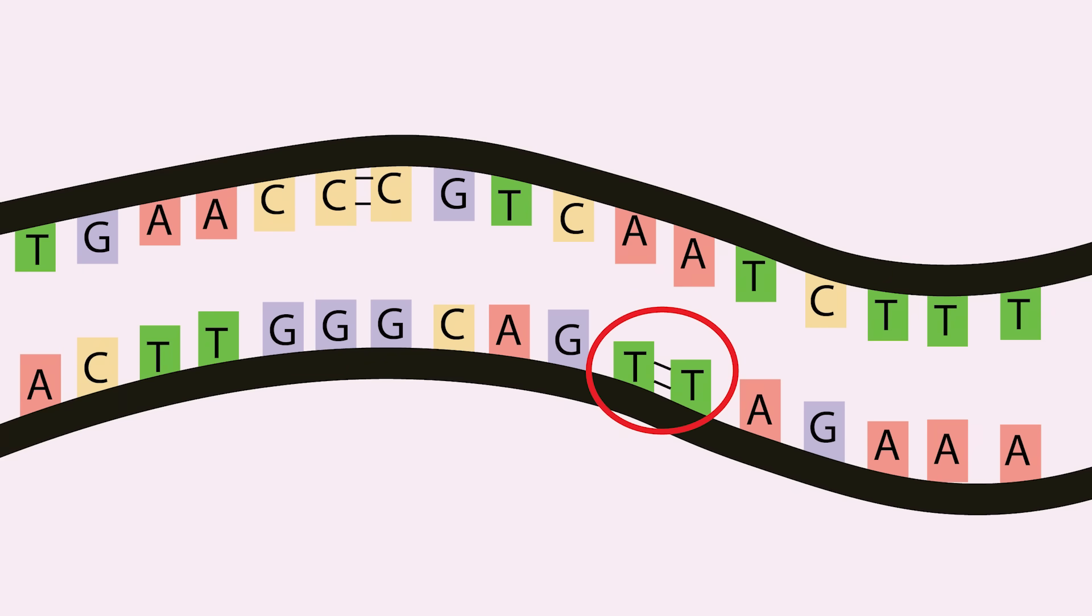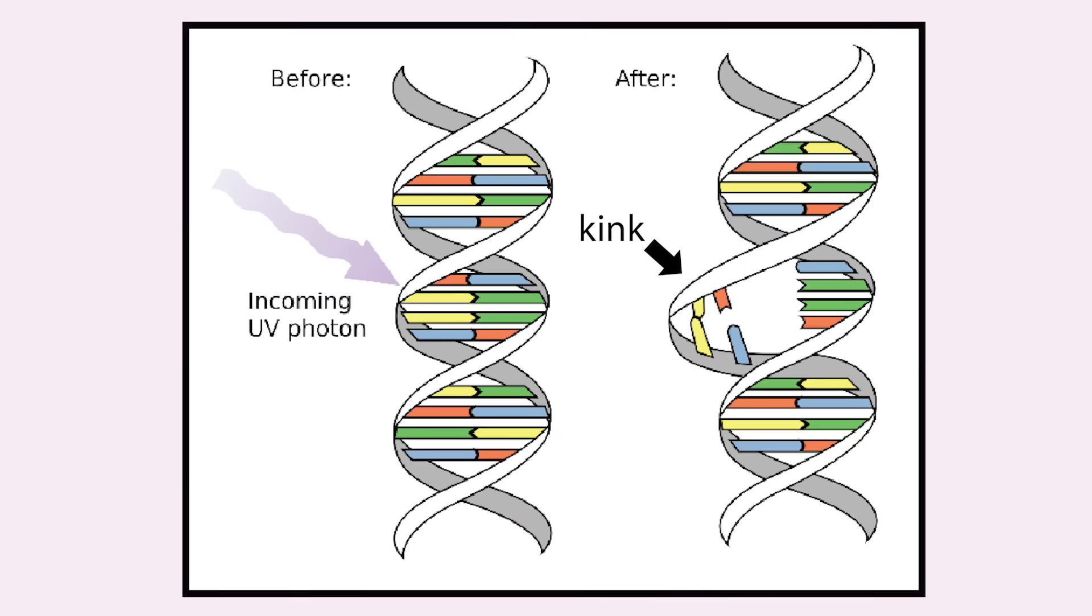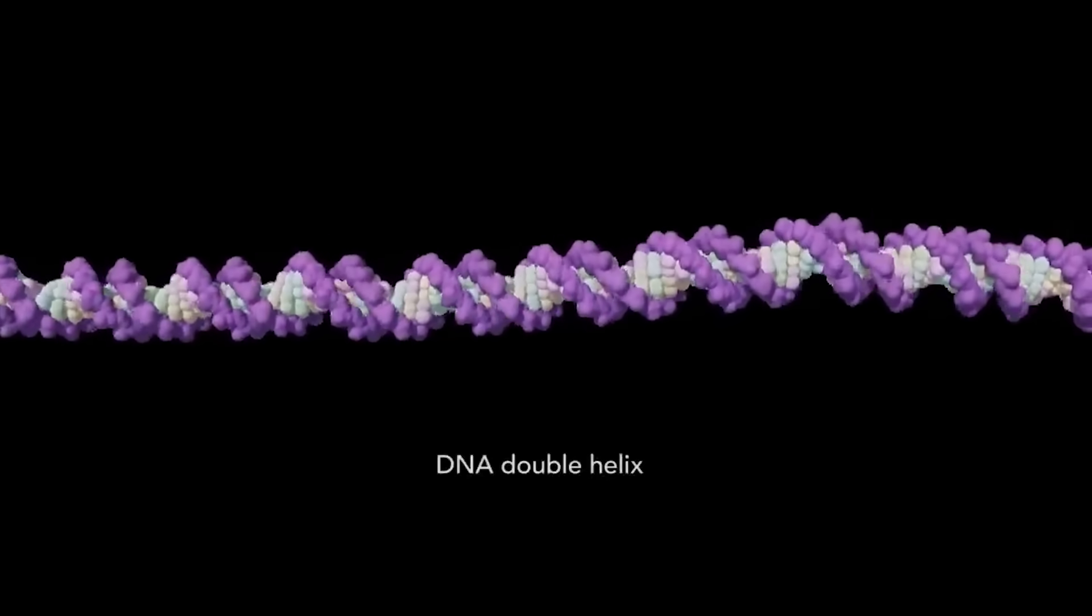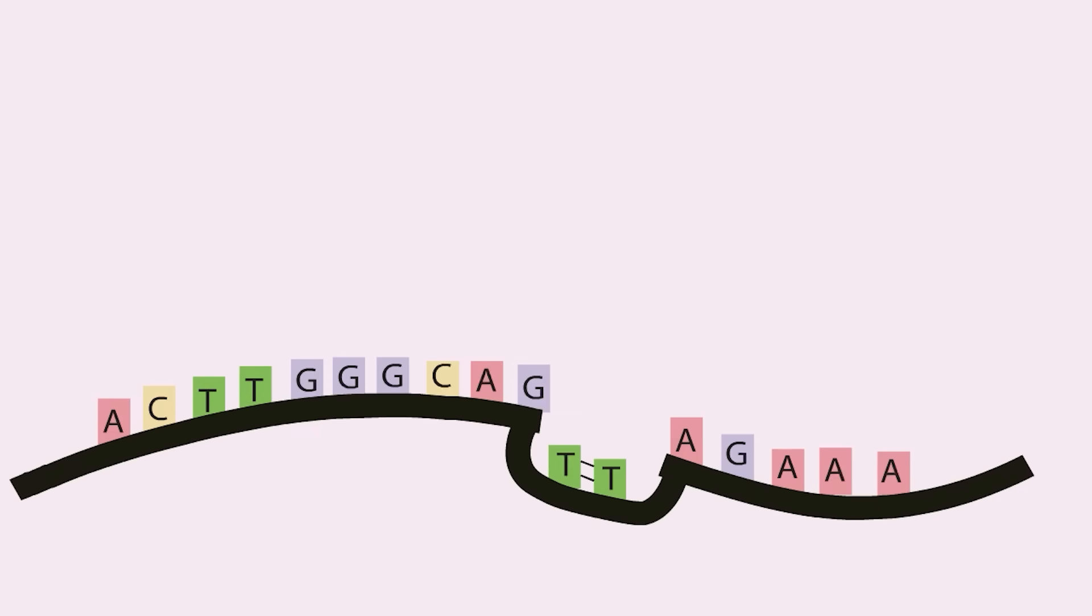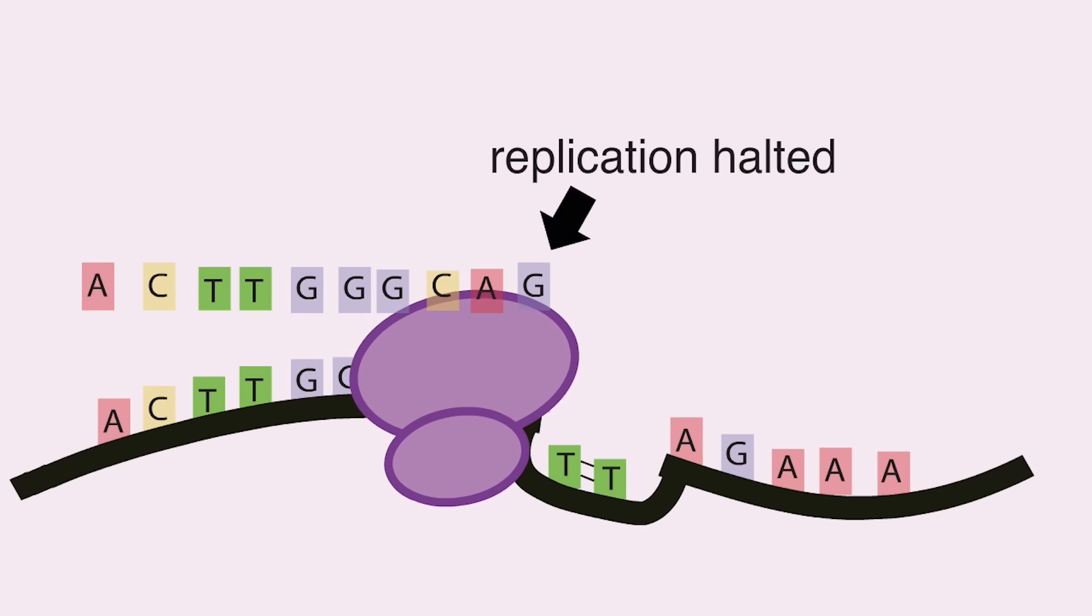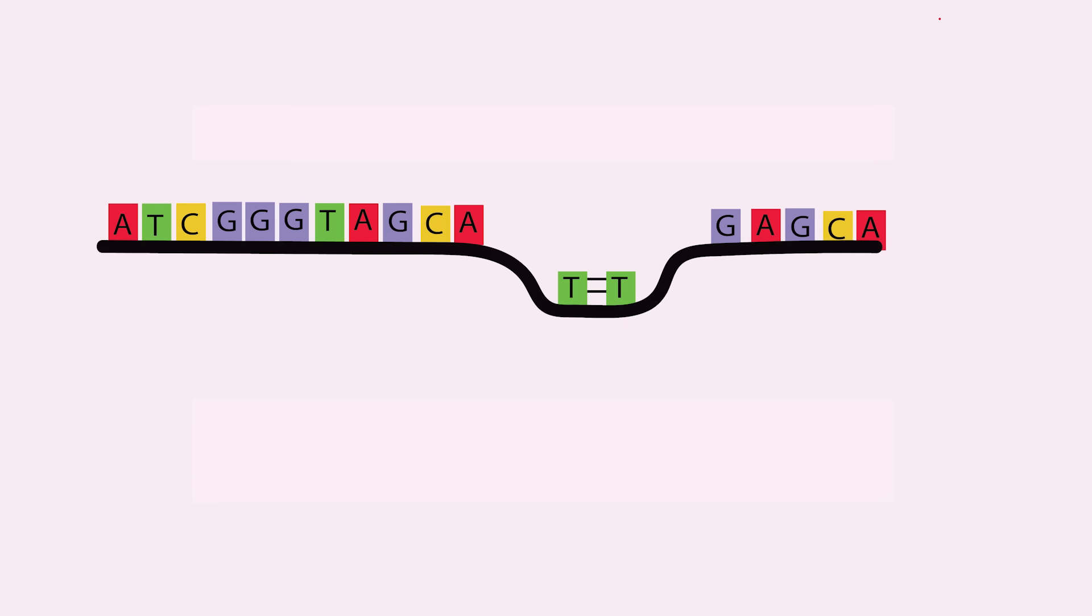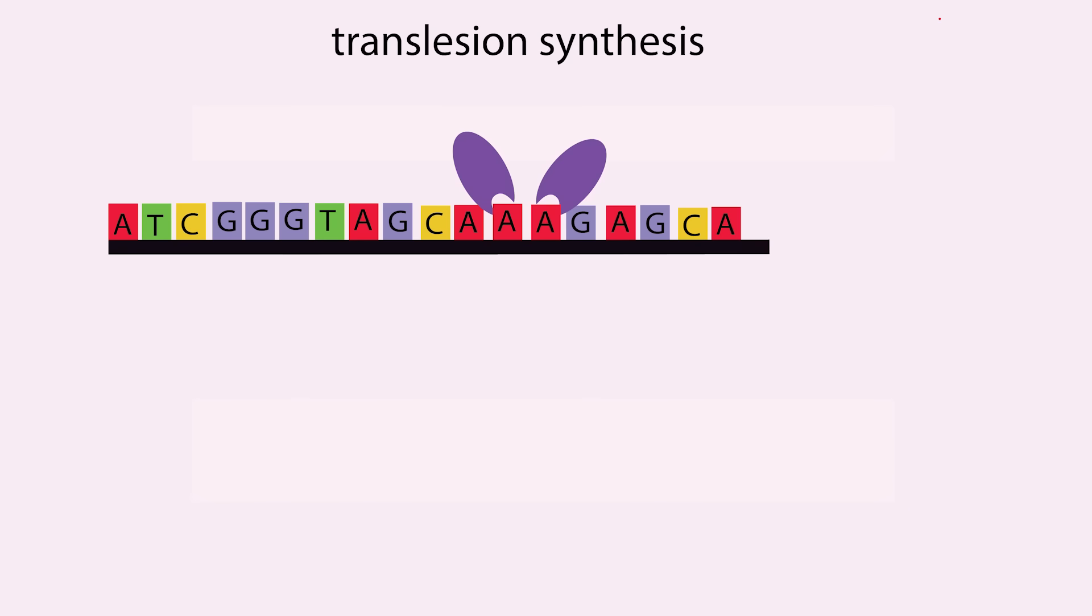However, thymine dimers are much more common than cytosine, and will therefore be covered exclusively. When adjacent thymines form bonds with each other, it's called crosslinking, and this new molecule is called a thymine dimer. Dimers are a problem for your DNA because they form a kink in the DNA helix. This prevents the DNA from being replicated properly when enzymes copy it during mitosis. The enzyme that copies DNA, called DNA polymerase, needs a flat surface to copy nucleotides. When it approaches this kink, it cannot continue, and replication halts. When this happens, a process called translesion synthesis occurs, where the kink is removed and the right nucleotide is inserted. With the kink filled in, the DNA is copied.